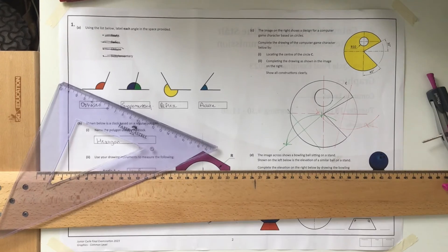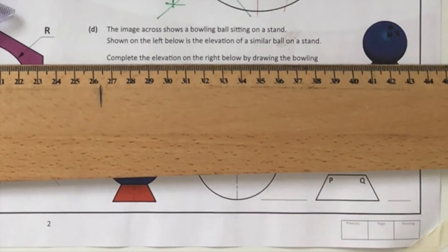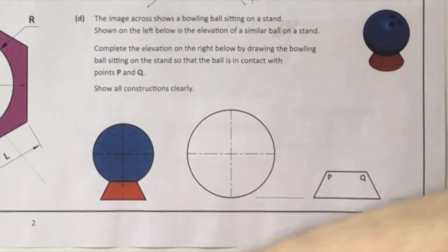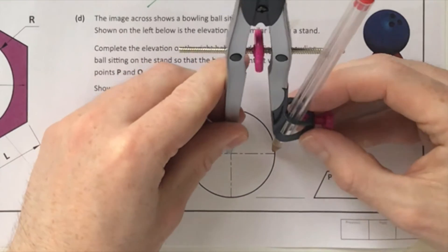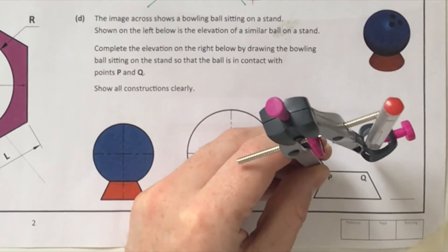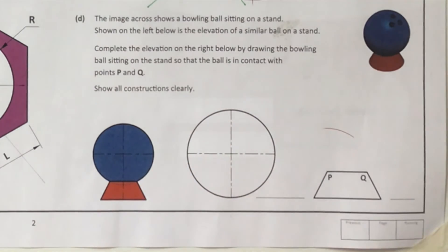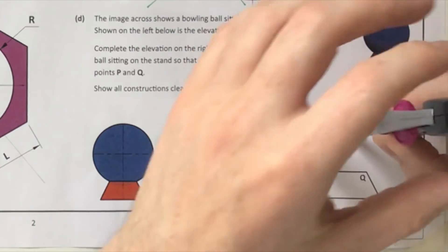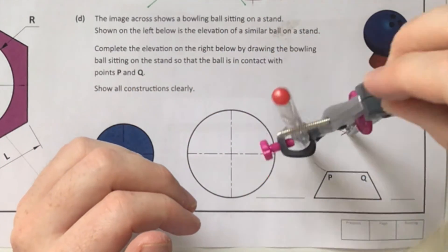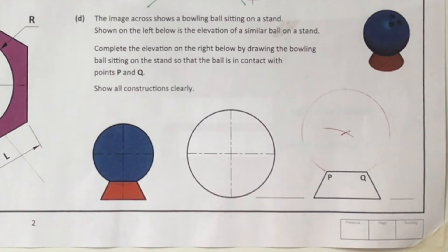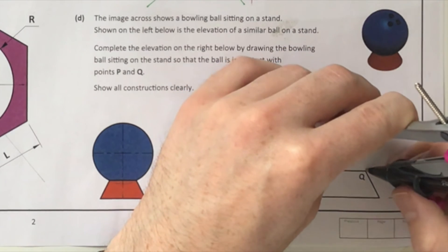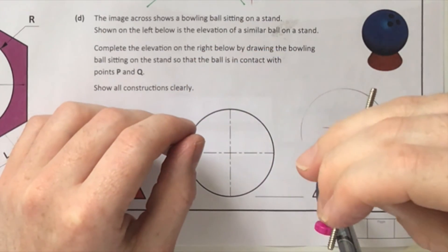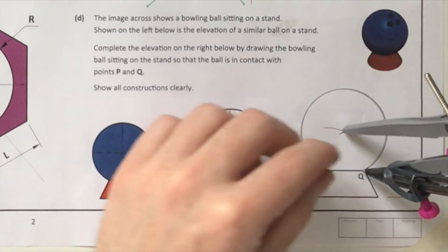Question 1d shows a bowling ball going onto a stand with points P and Q where the ball contacts. Take the radius of the given circle, put the sharp end at P and swing an arc, then at Q and swing an arc. Where they intersect gives the new center of the ball. Draw in the bowling ball checking it hits P and Q, then go over it in heavy pencil or black pen to finish.